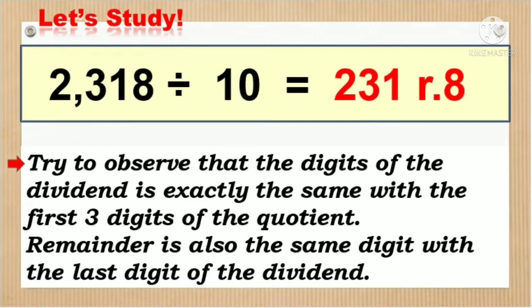Pag-aralan natin. 2,318 divided by ten is equal to 231 remainder eight. Mapapansin natin na ang first three-digit ng dividend ay katulad lang ng first three-digit ng ating quotient. At dahil ten ang ating divisor, mapapansin natin na ang last digit sa ating dividend ay sharing digit ng ating remainder. Ang dali lang, hindi ba?